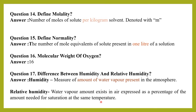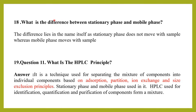What is the difference between stationary phase and mobile phase? The main difference is that the stationary phase does not move with the sample, whereas the mobile phase moves with the sample. As the name indicates, the stationary phase remains fixed, while the mobile phase and sample flow through it together.